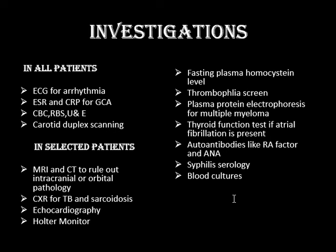There are certain investigations we have to do in all patients and certain investigations only in selected patients. In all patients, we need to do an ECG to look for arrhythmias, ESR and CRP for giant cell arteritis, CBC, random blood sugar, urea and electrolytes, and carotid duplex scanning to look for carotid stenosis.